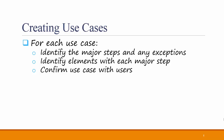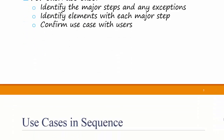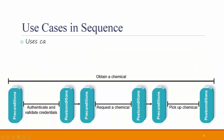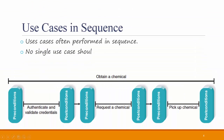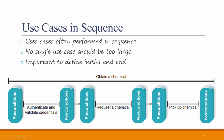The easiest way to confirm use cases is by role-playing — in other words, have the user go through the use case and imagine performing each step. Use cases are often performed in sequence. No single use case should be too large; it's important to define initial and ending states. If you feel the use case is too large, break it up into smaller use cases that are easier to handle.